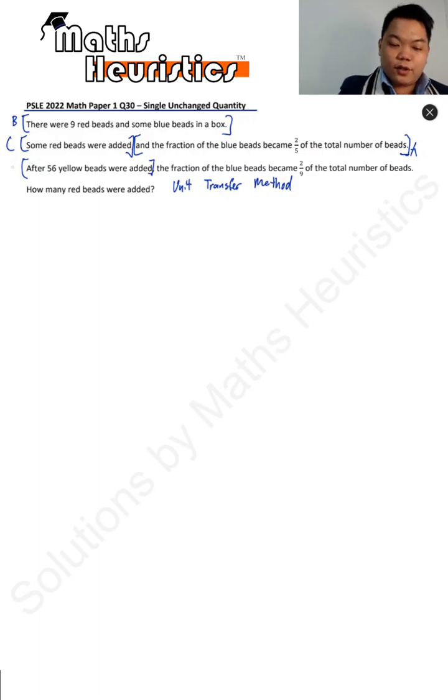After 56 yellow bits were added, that's another change. The fraction of the blue bits became 2 ninth of the total number of bits. That's your second after. How many red bits were added? So that's the objective.